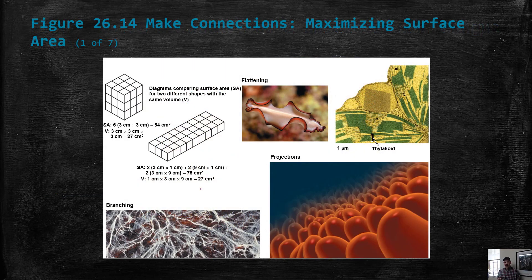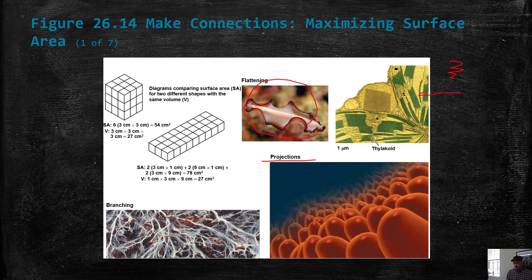This diagram illustrates a concept we've discussed repeatedly: the importance of surface area to volume ratio. We see it in thylakoid membranes, in the shapes of flatworms, in folding and flattening, in projections like villi, and in branching like in fungal hyphae. It comes up throughout biology because structure and function are intimately linked — that's a key concept of biology.